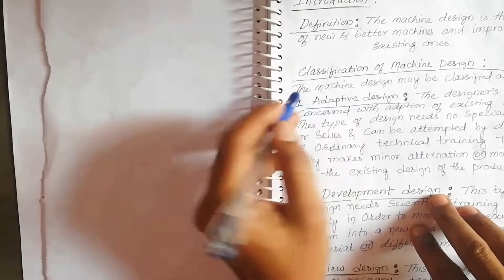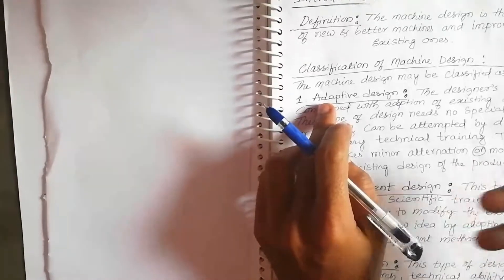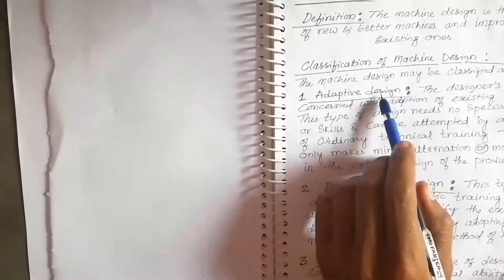What do you mean by adaptive design? Adaptive design is, as the name suggests, where you adopt a design which already exists in the market. For adaptive design, a designer is not required to have any special skills. An ordinary person can make alterations in the design.